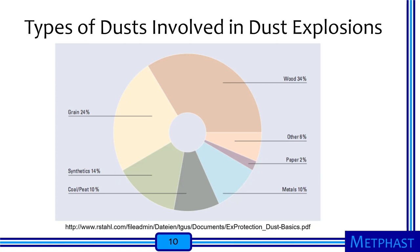Many different types of dust are involved in dust explosions. The biggest slice is from wood dust, and grain dust is also very common — grain silos, for example, are places where high levels of dust can get into the air and potentially be ignited. There are also synthetic materials, coal, peat, and paper. Metals are an important source of combustible dust explosions, and they're used very commonly in the nanomaterial industry.